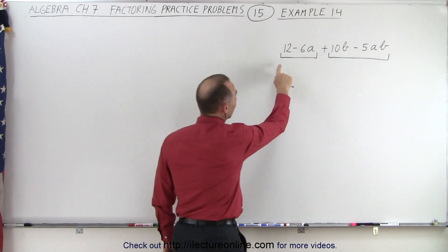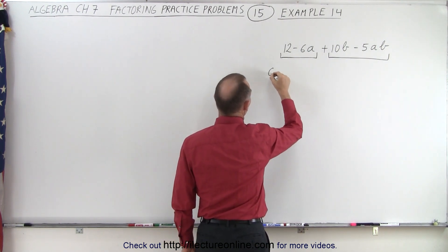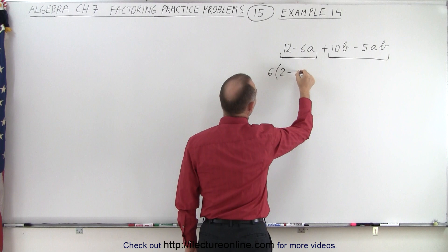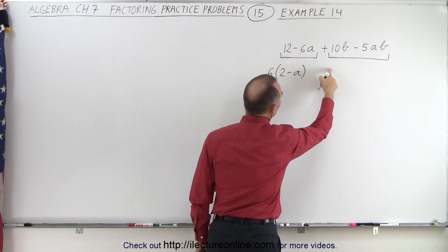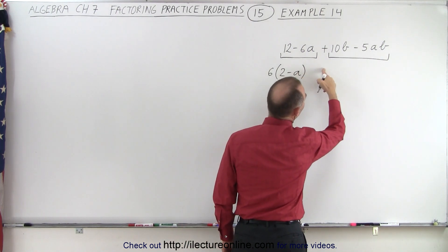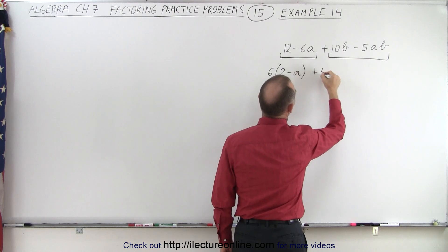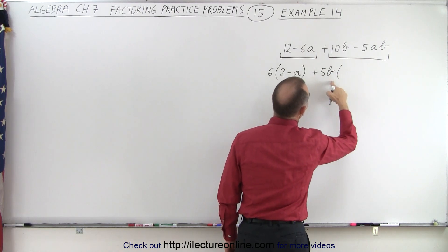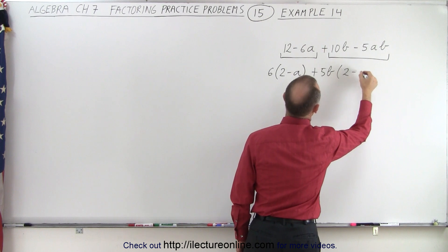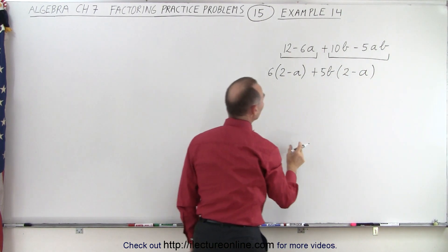First of all, here we can see that we can factor out a number 6. That leaves us with a 2 minus A. And then here, let's see if we can factor out a 5 and a B, so plus 5B. And let's see what we have left. That gives us a 2 minus A.